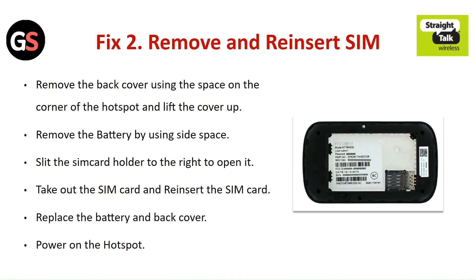Fix 2: Remove and reinsert the SIM. Remove the back cover using the space on the corner of the hotspot and lift the cover up. Remove the battery by using the side space. Slide the SIM card holder to the right to open it. Take out the SIM card and reinsert it. Replace the battery and back cover, then power on the hotspot.